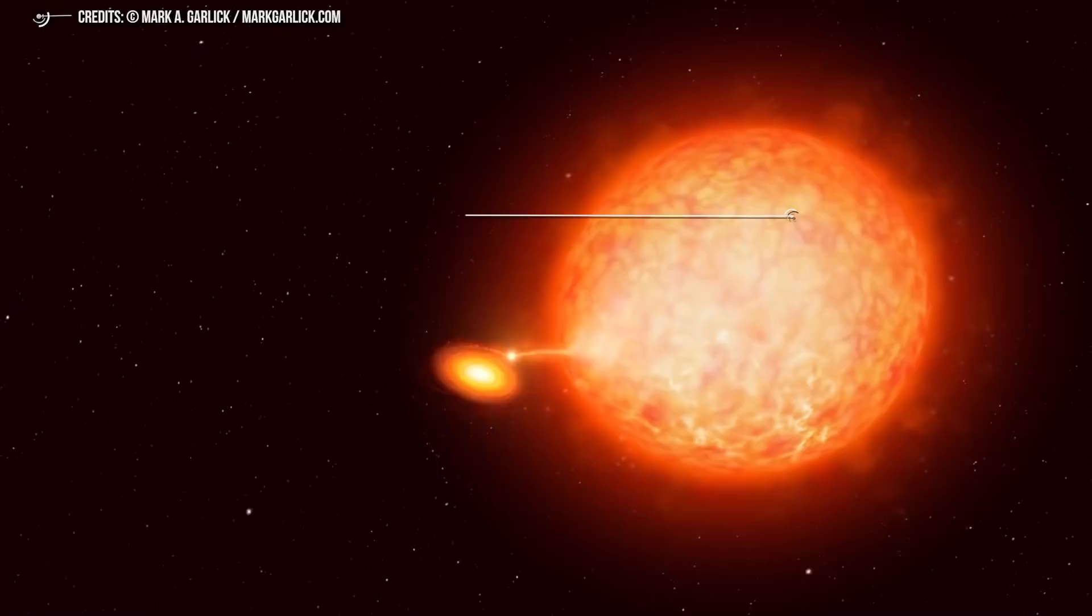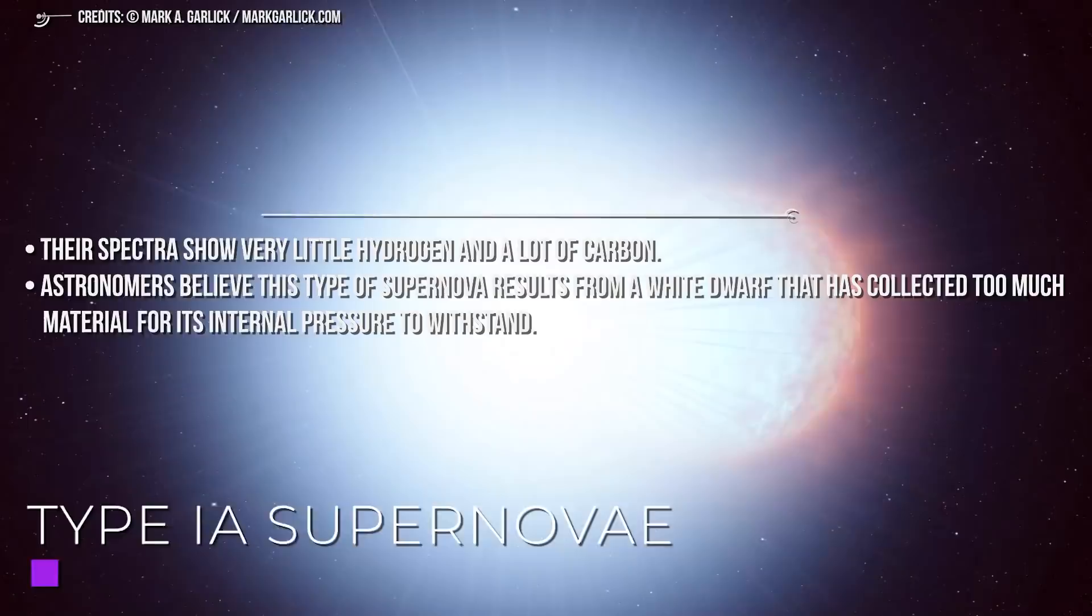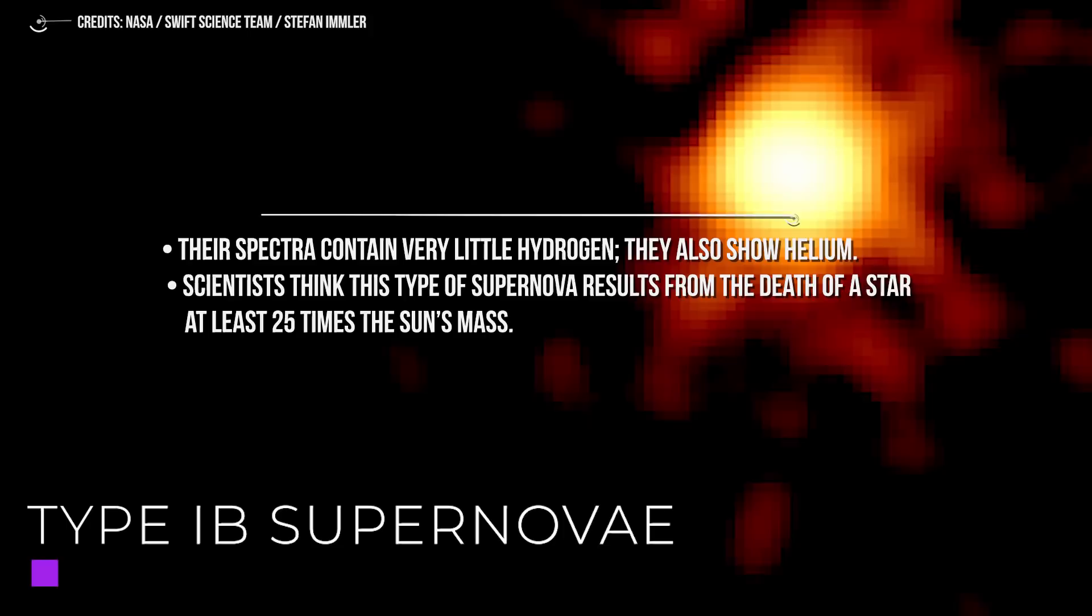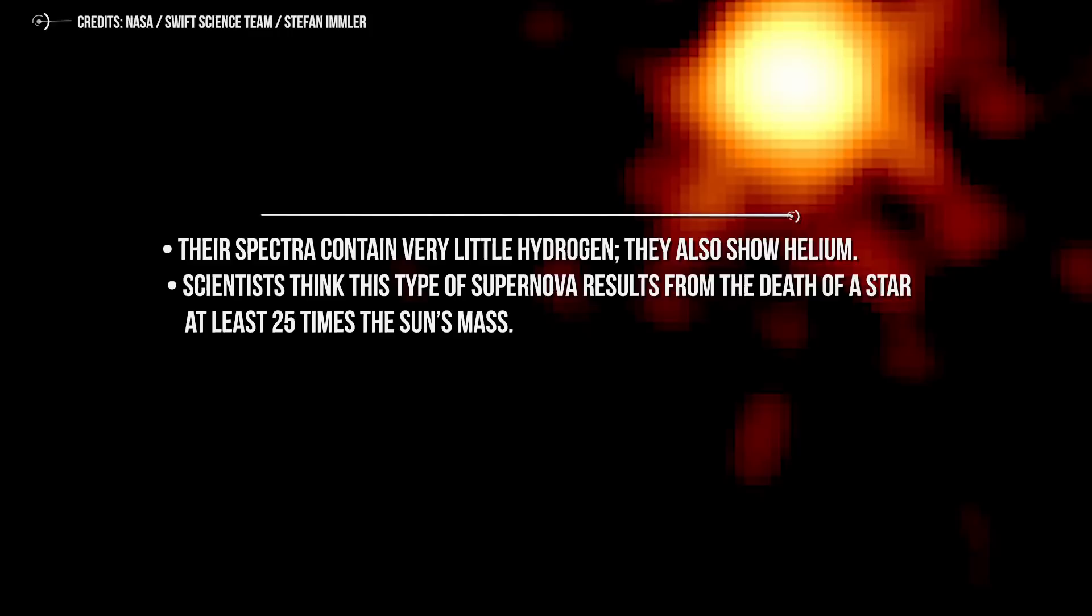Type 1A supernovae: their spectra show very little hydrogen and a lot of carbon. Astronomers believe this type results from a white dwarf that has collected too much material for its internal pressure to withstand. Type 1B supernovae: their spectra contain very little hydrogen and show helium. Scientists think this type results from the death of a star at least 25 times the sun's mass.